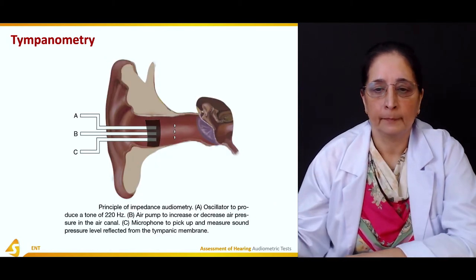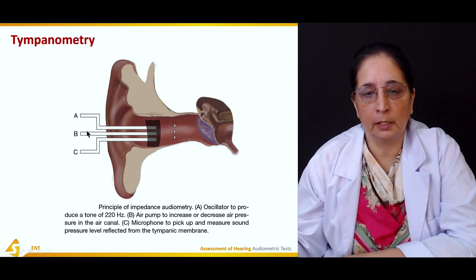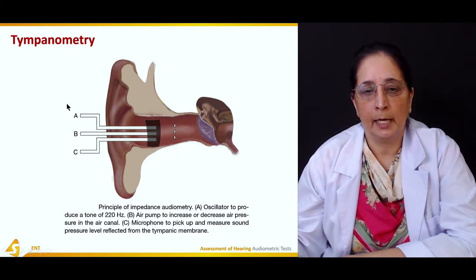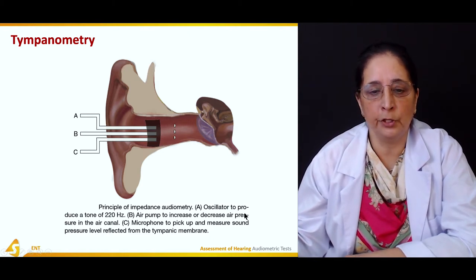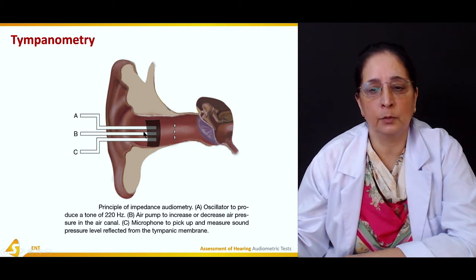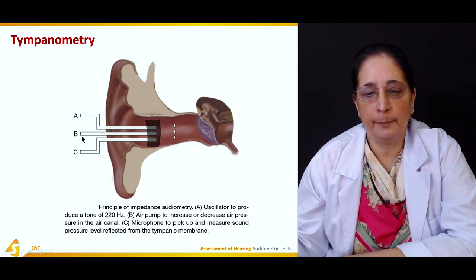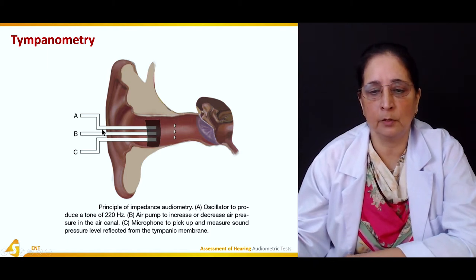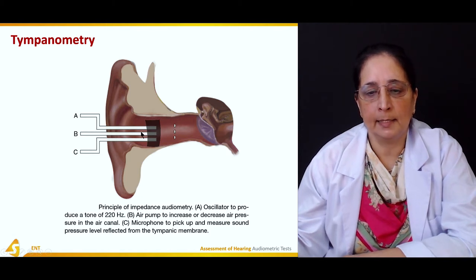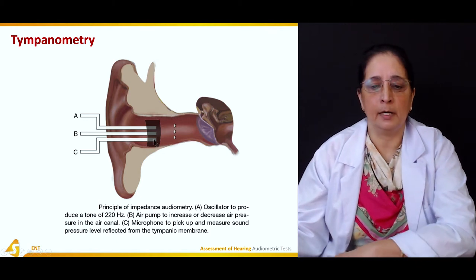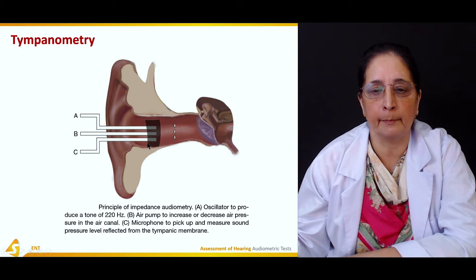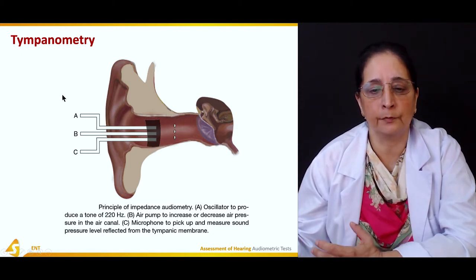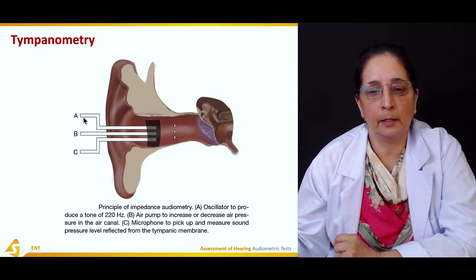In tympanometry, three probe components are used: A is an oscillator to produce a tone of 220 Hz; B is an air pump to increase or decrease pressure in the ear canal; and C is a microphone to pick up and measure the sound pressure level reflected by the tympanic membrane.